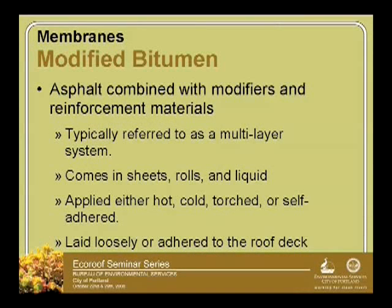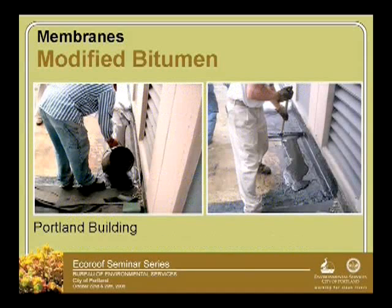It comes in sheets, rolls, and liquid. It can be applied hot, cold, or torched down — we have slides of those — and there's also a loose-laid material. This is a material put on this building right above us. It's a modified bitumen, hot applied. There are problems and benefits with hot applied. The building officials here who take care of our city buildings decided on this particular product, and the company that makes it says it's good for an eco-roof. You can see it's poured on, they put some fabric on, and they did two pour-on layers with a cap sheet over the top.